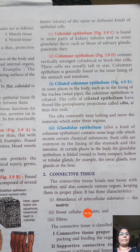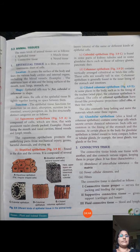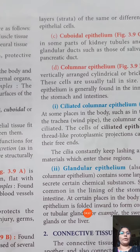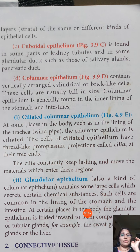Cuboidal epithelial cells are found in the kidney tubule where they perform secretion. They are also found in glandular ducts such as salivary glands and the pancreatic duct.